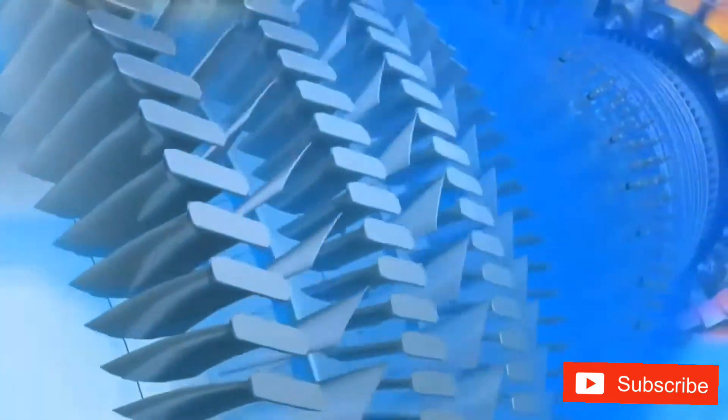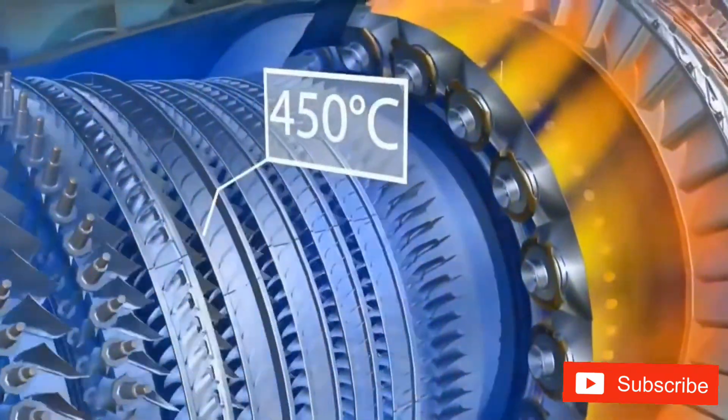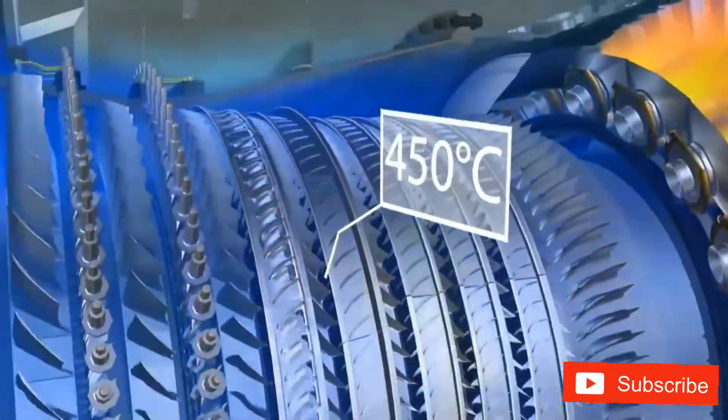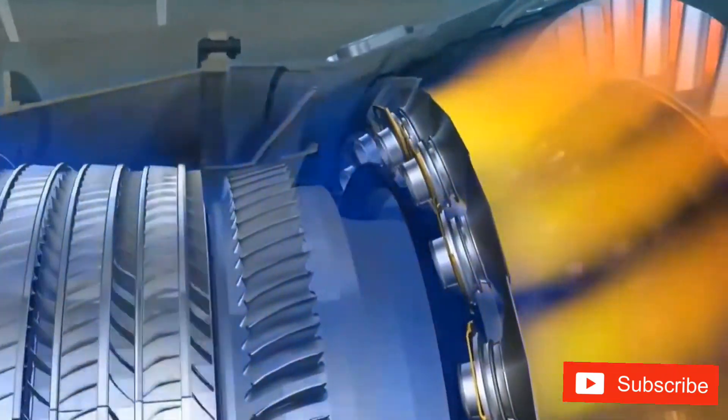The air is compressed in the low and high pressure compressors, and its temperature can reach 450 degrees Celsius, after which it enters the combustor, where fuel is injected and ignited.